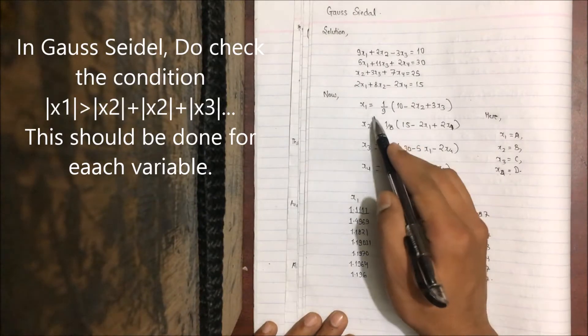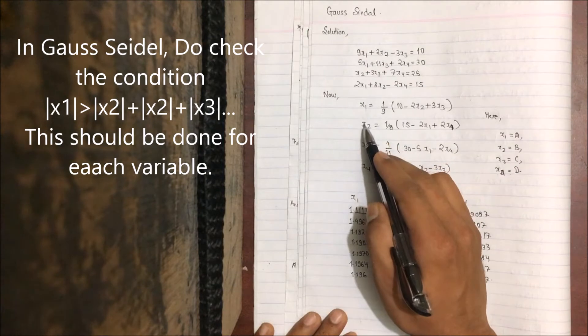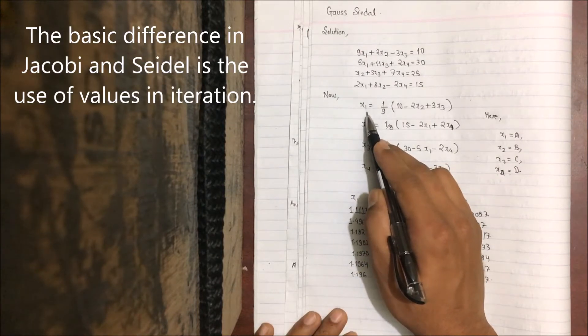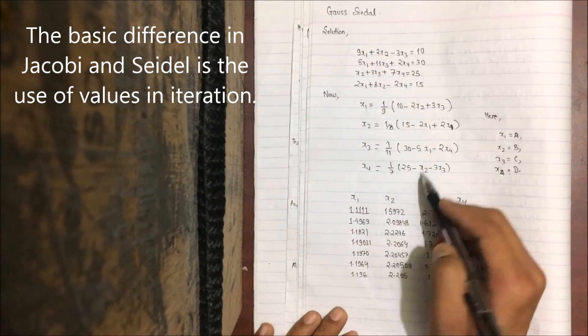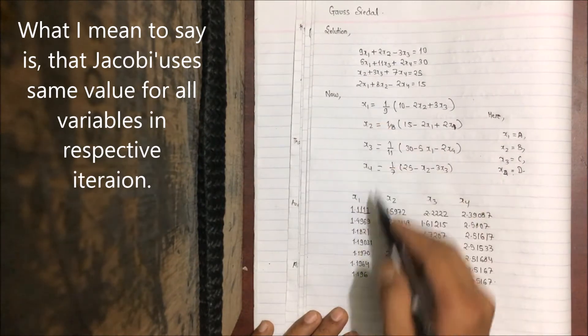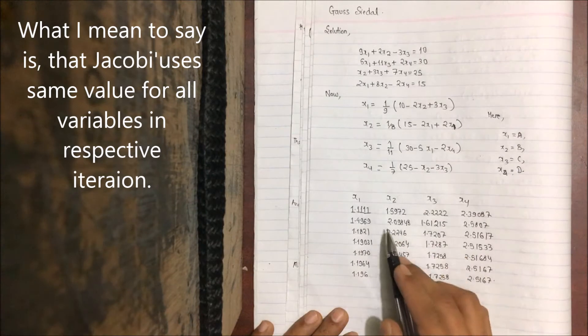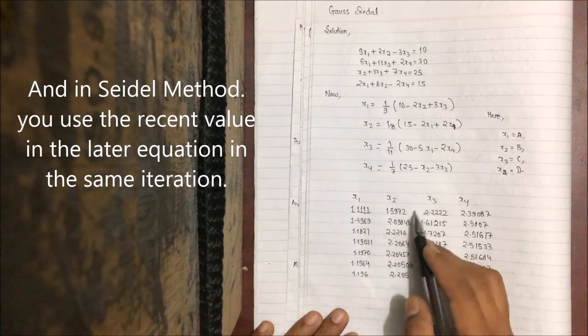In Gauss-Seidel, we use the latest value obtained for each variable. If x1 is here, the value obtained here should be used here, and x2 should be used here. In Gauss-Jacobi, the constant value or first iteration value is used in the second iteration, but in Gauss-Seidel, the first iteration value is used within the first iteration itself.